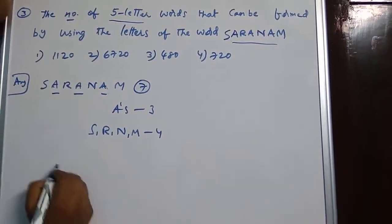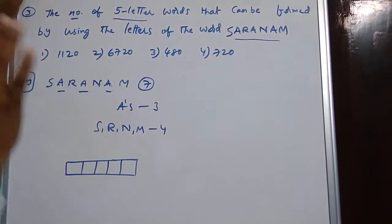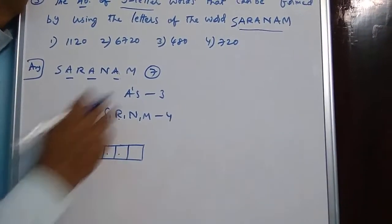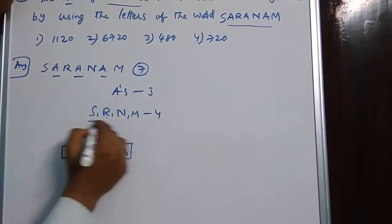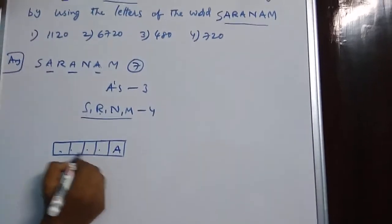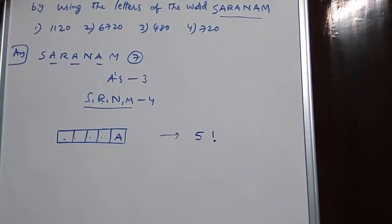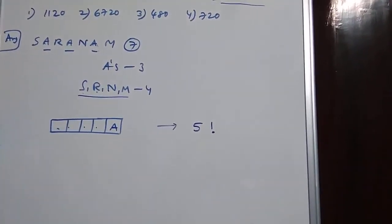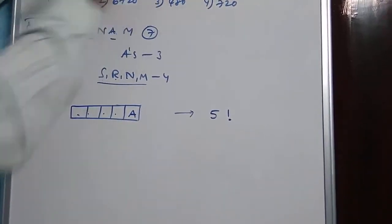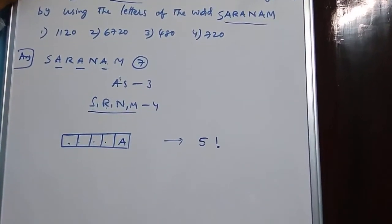Now we have to form the 5-letter word. The 5 letter positions are 1, 2, 3, 4, 5. First, take the combination where all letters are different — that means S, R, N, M and 1 A — these 5 distinct letters are fixed. These 5 places can be filled with 5 different letters in 5 factorial ways.